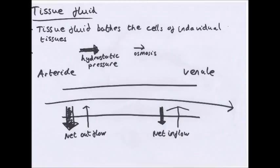Tissue fluid is the fluid that surrounds cells in tissues. It's made from substances that leave the blood — oxygen, water, and nutrients. Cells take in oxygen and nutrients from the tissue fluid and release metabolic waste into it. In a capillary bed, substances move out of the capillaries into the tissue fluid by pressure filtration — either by diffusion down a concentration gradient or by a pressure gradient — and cells take in the nutrients they need.